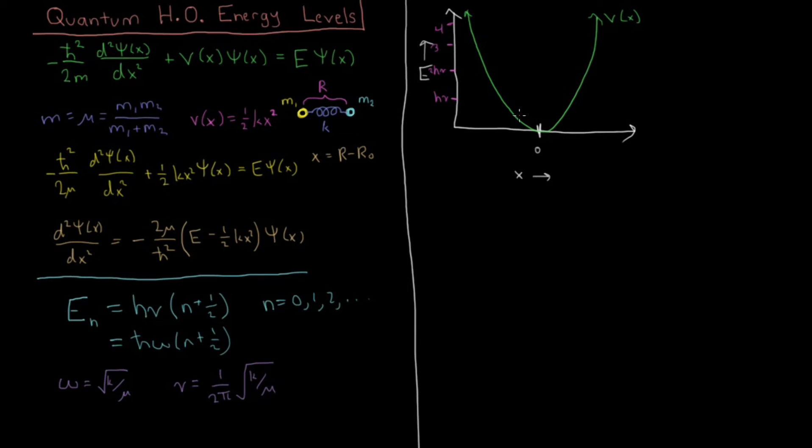At 1 half h nu, we have the n equals 0 state. And then at 3 halves, we have n equals 1. At 5 halves, n equals 2. 7 halves, n equals 3, etc. So we have n equals 0, 1, 2, 3. And we have the energy equals 1 half h nu, or h bar omega, 3 halves, 5 halves, 7 halves, etc.